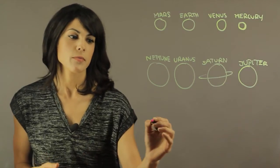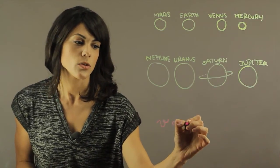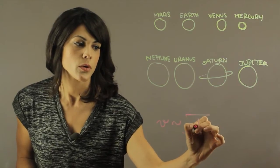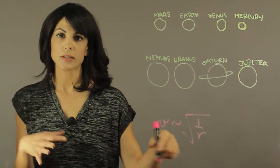So the orbital speed of a planet depends on the square root of 1 over the square root of r. r is the distance to the Sun.